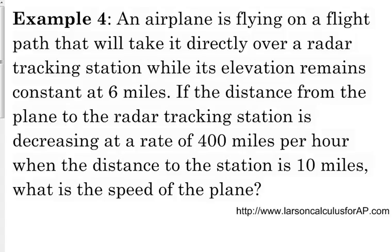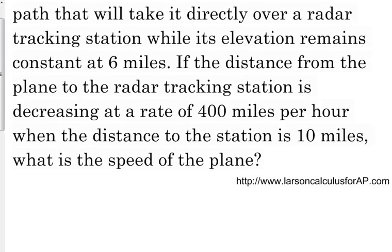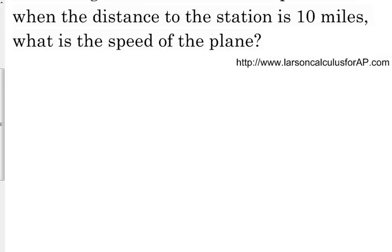This scenario says we have an airplane that's flying on a flight path that will take it directly over the radar tracking station while its elevation remains constant at 6 miles. If the distance from the plane to the radar tracking station is decreasing at a rate of 400 miles per hour, when the distance to the station is 10 miles, what is the speed of the plane?